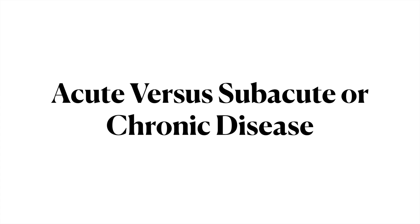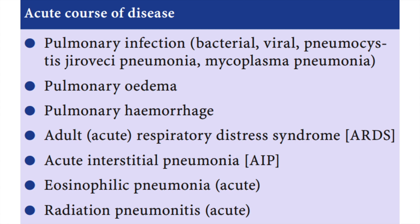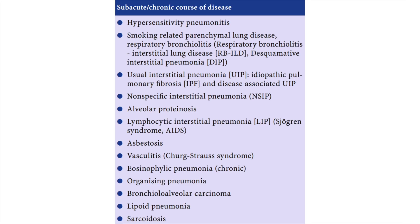To interpret a ground glass appearance, you need a proper patient history. Whether it is acute versus subacute or chronic is extremely important. For an acute presentation, the most likely causes are pulmonary infection (bacterial, but more commonly viral, Pneumocystis jirovecii, or Mycoplasma), pulmonary edema, pulmonary hemorrhage, ARDS, acute interstitial pneumonia, eosinophilic pneumonia, and acute radiation pneumonia. In subacute or chronic history: hypersensitivity pneumonitis, smoking-related lung diseases, UIP, NSIP, alveolar proteinosis, lymphocytic interstitial pneumonia, asbestosis, and vasculitis.